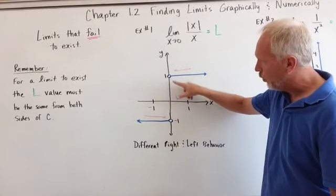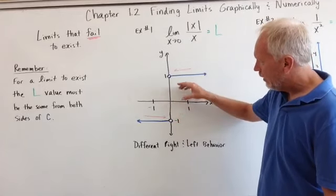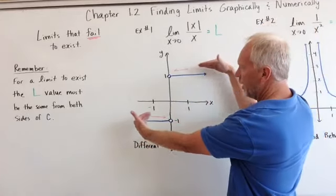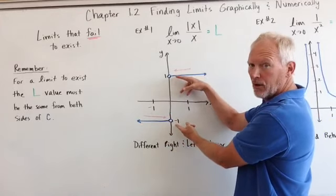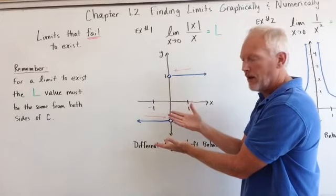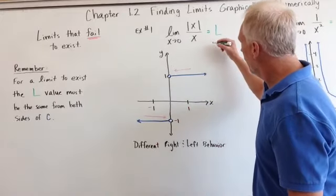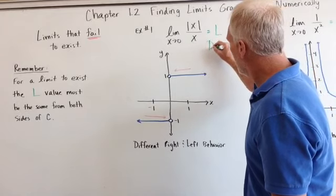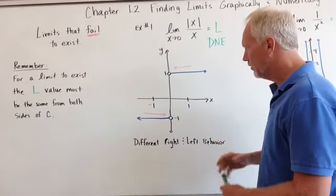So that's why we have the two holes there when X is equal to zero. However, because they're coming from two different sides and they're not the same value of Y's, now we cannot say that the limit exists. So for this, the L does not exist for that particular situation.